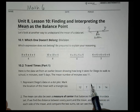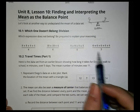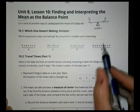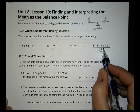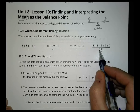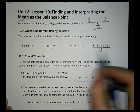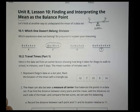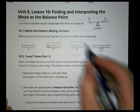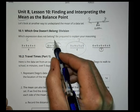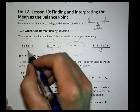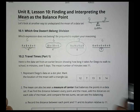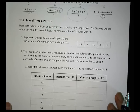First, we have a 'which one doesn't belong' activity with division. You decide which one doesn't belong and explain your reasoning. For example, one has a divisor of five while the rest are four. Another has only three numbers on top while the others have four. One equals seven while the rest equal six. And one is the only expression where the denominator divides evenly into each numerator. Whatever reasons you come up with, those are great.